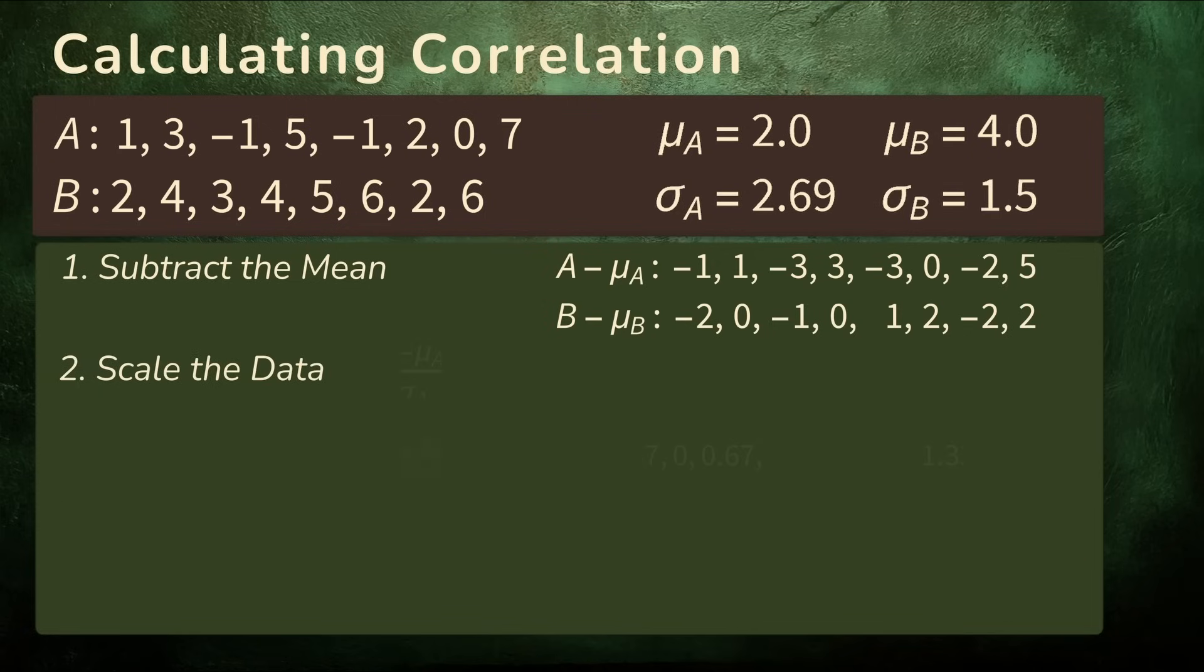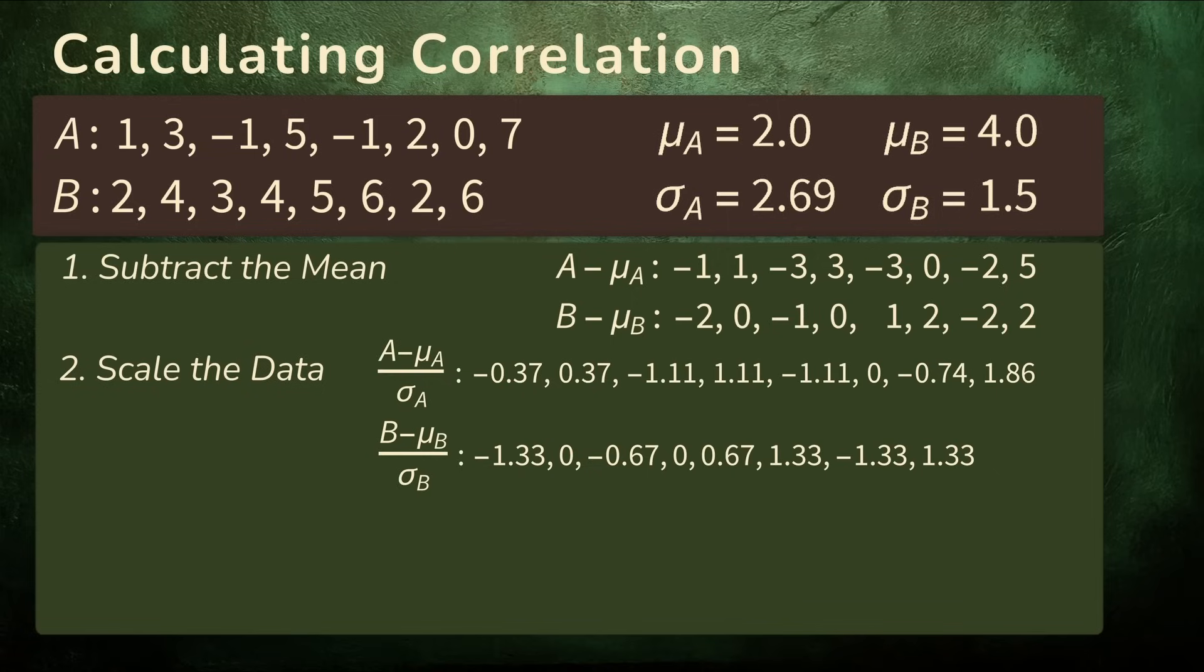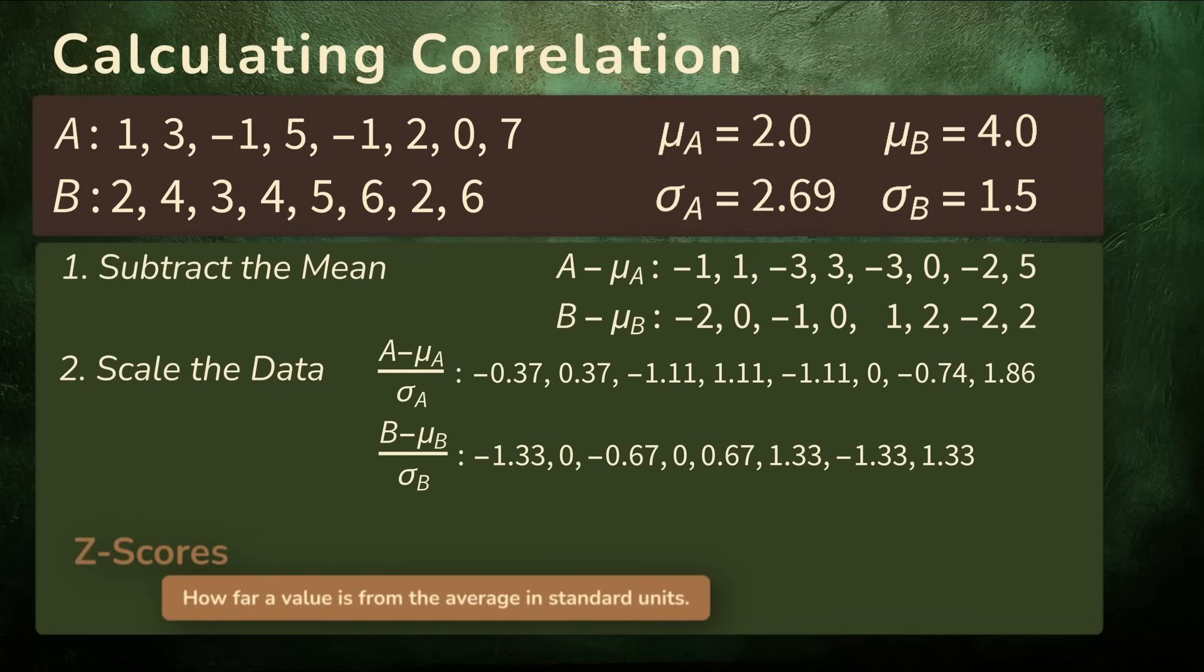Next we scale the data. We divide each value by its standard deviation. That adjusts for how volatile the sequence is, how widely it tends to fluctuate. These resulting values are called z-scores. Each z-score tells us how far a value is from the average in standard units. A positive z-score means it's above average. A negative one means it's below. The bigger the number, the farther it is from the mean.